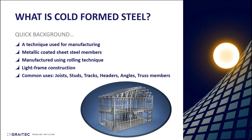Cold form steelwork is generally used in the light frame industry — for example, light framed SFS systems, walled systems, roofing, trusses, and floors. Common uses include joists, studs for lightweight framing, tracks and headers used as part of wall elements, angles, truss members, and also purlins, which is another very common application.